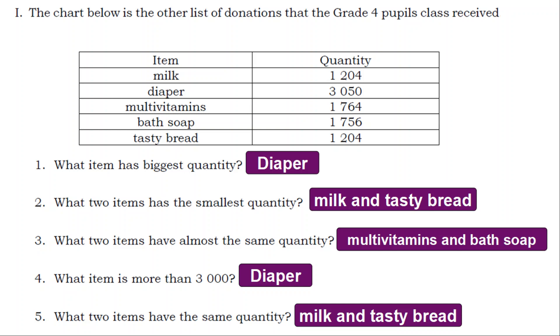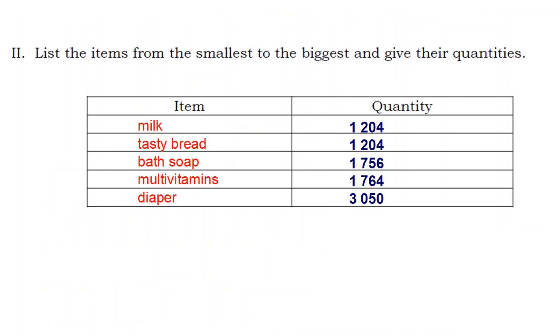5. What two items have the same quantity? Milk and Tasty Bread.